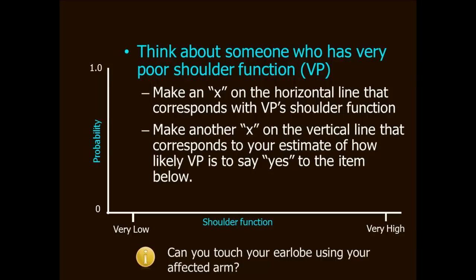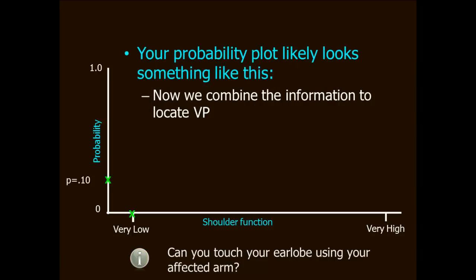Now make another x on the y-axis this time. This x corresponds to how likely VP is to say yes, I can touch my earlobe with my affected arm. Your plot probably looks something like this.